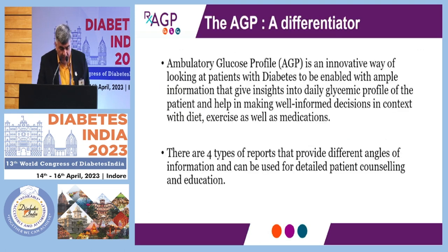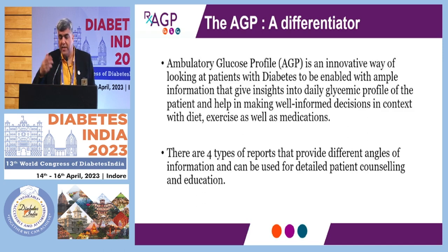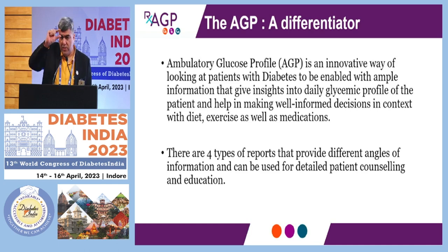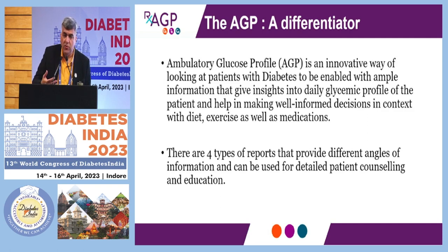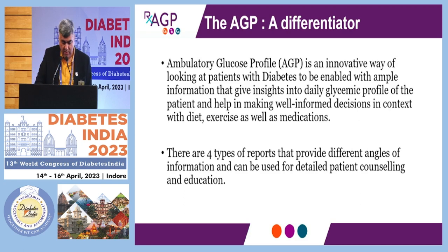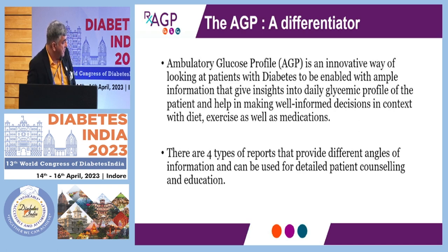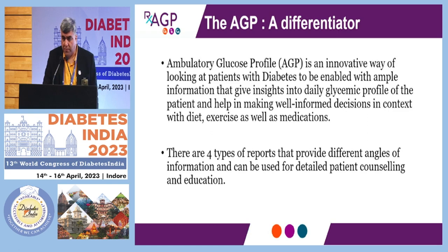It's an innovative way of looking at patients with diabetes because of the ample amount of data and then simplifying that data. It's basically a software derivation compressing data points to give us a more meaningful graph which we can understand and work on with the patient. Patients with type 1 diabetes who use it also learn to interpret this, though largely in India most are only looking at numbers and not doing much with the data. There are four types of reports that provide different angles of information and can be useful for patient counselling.